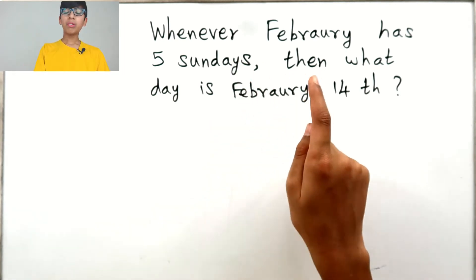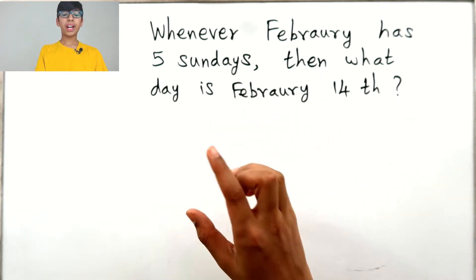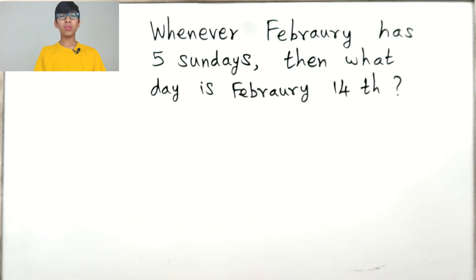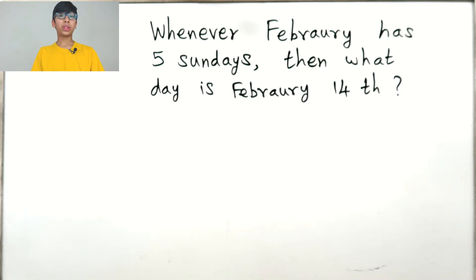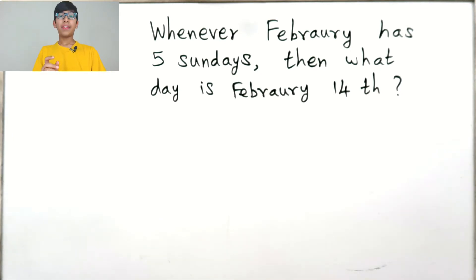Whenever February has five Sundays — doesn't February have 28 days? It can't have five Sundays. In some years, February actually has 29 days, and those years are called leap years.